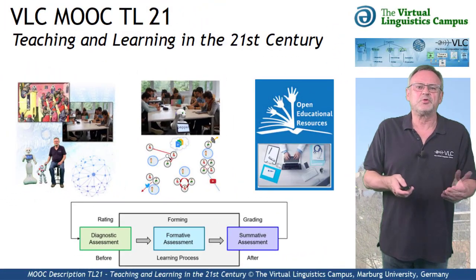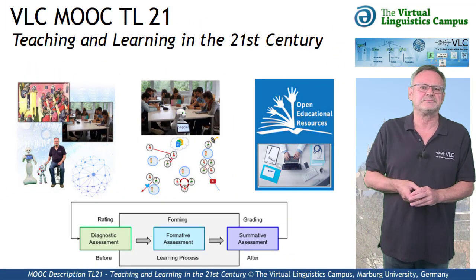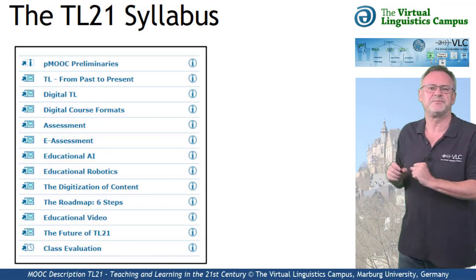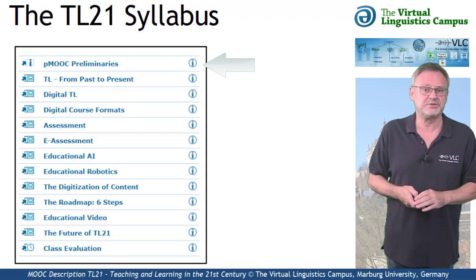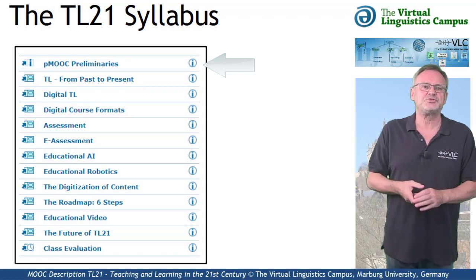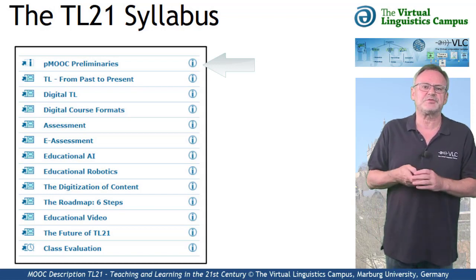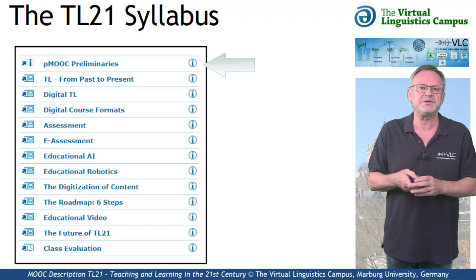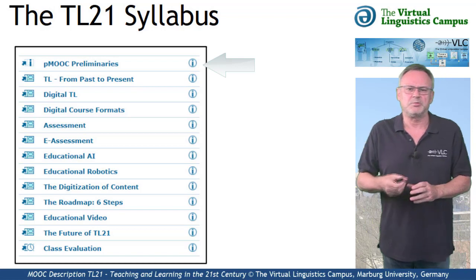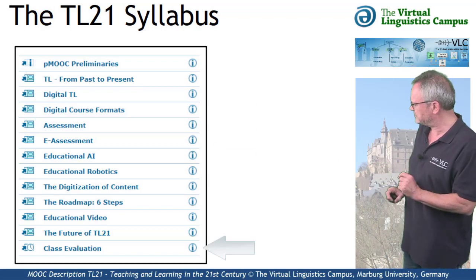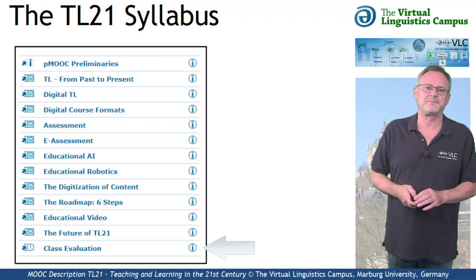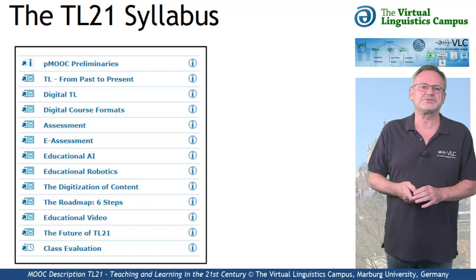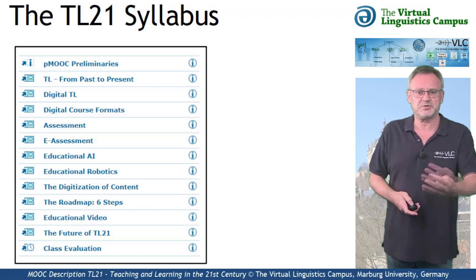Let us now look at the content of TL21. The class consists of 13 units, where the first one — the class preliminaries — informs you about some general aspects of the class and discusses what it means to study online using our PMOOCs. The last one is your option to evaluate the class. The remaining units exhibit the content of this class, which is subdivided into four parts.